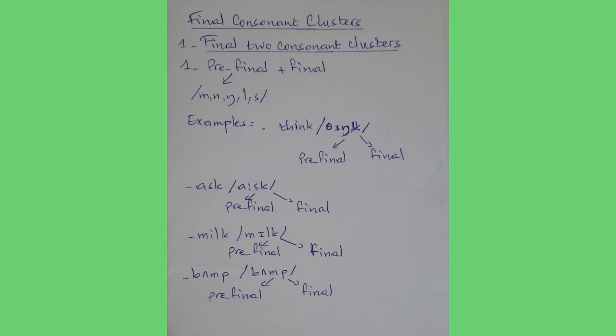Examples: 'think' — in 'think' we have pre-final /ŋ/ and /k/ as final. In 'ask', /s/ is pre-final and /k/ is final. In 'milk', /l/ is pre-final and /k/ is final. In 'bamp', /m/ is pre-final and /p/ is final.